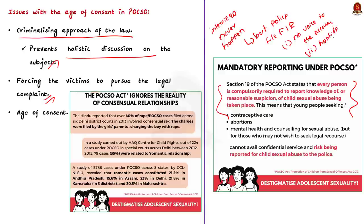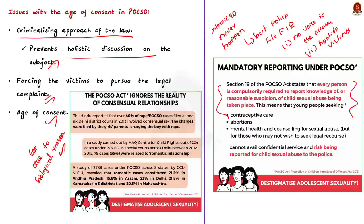Thirdly, the state is making a decision as to at what age a person can be competent enough to give consent for sexual intercourse. This one-size-fits-all solution is itself a problem, because the capacity to give consent develops differently among different people. This biological reality has been completely ignored while framing the age of consent under the POCSO Act.